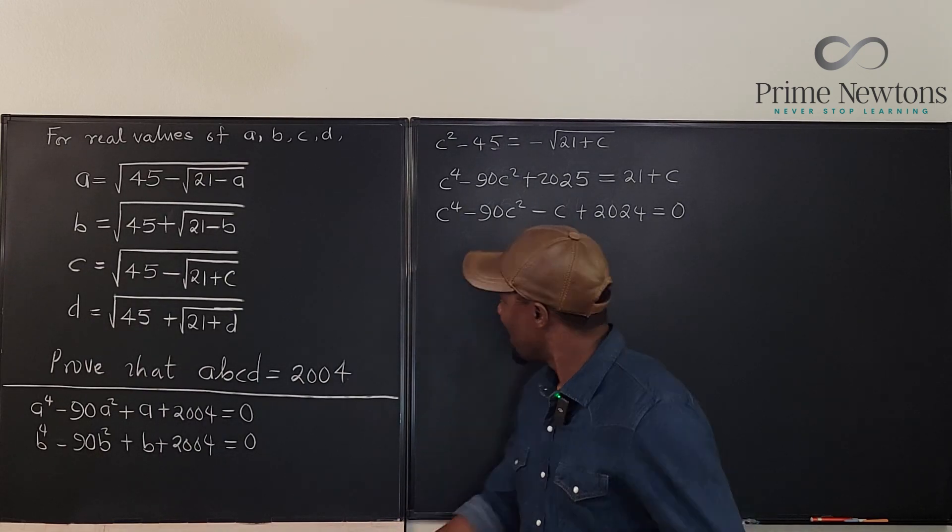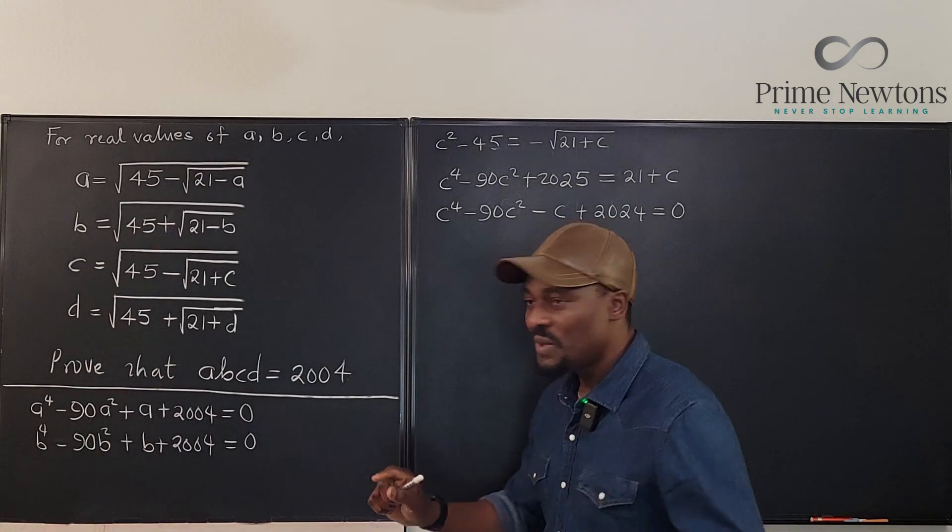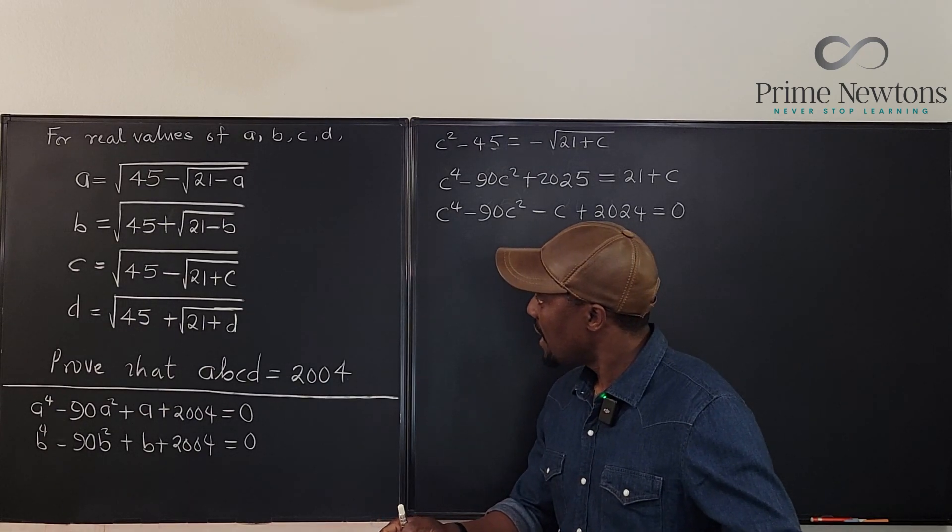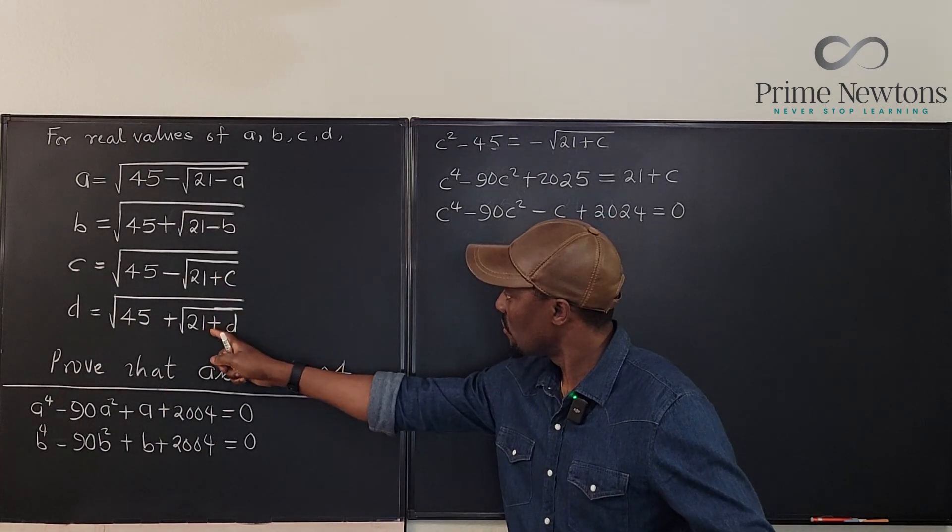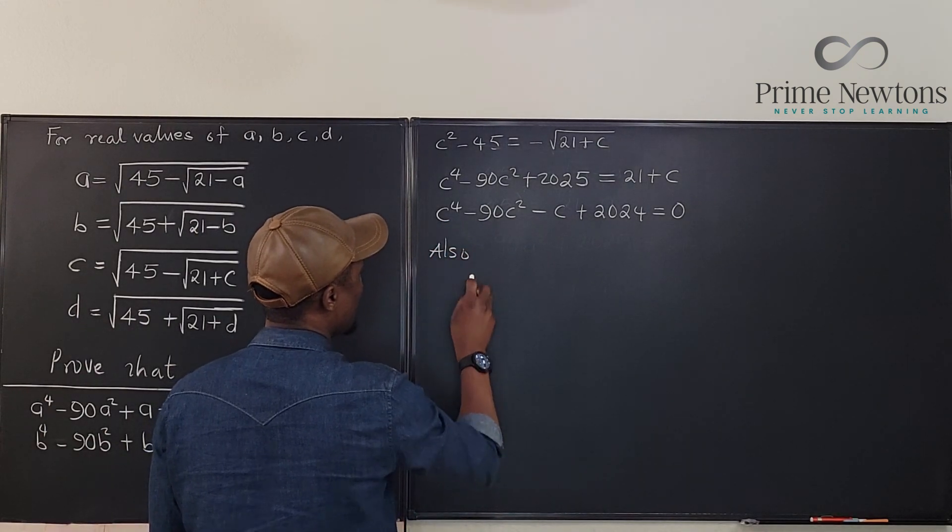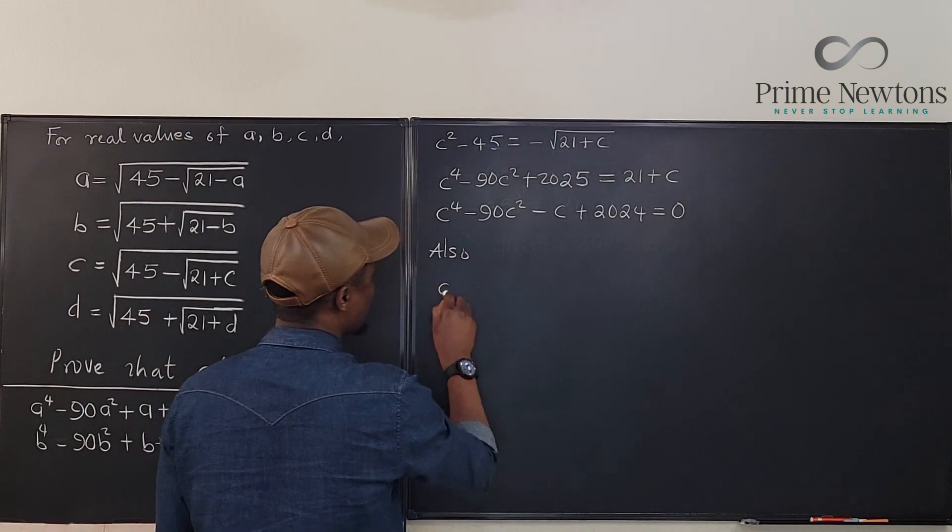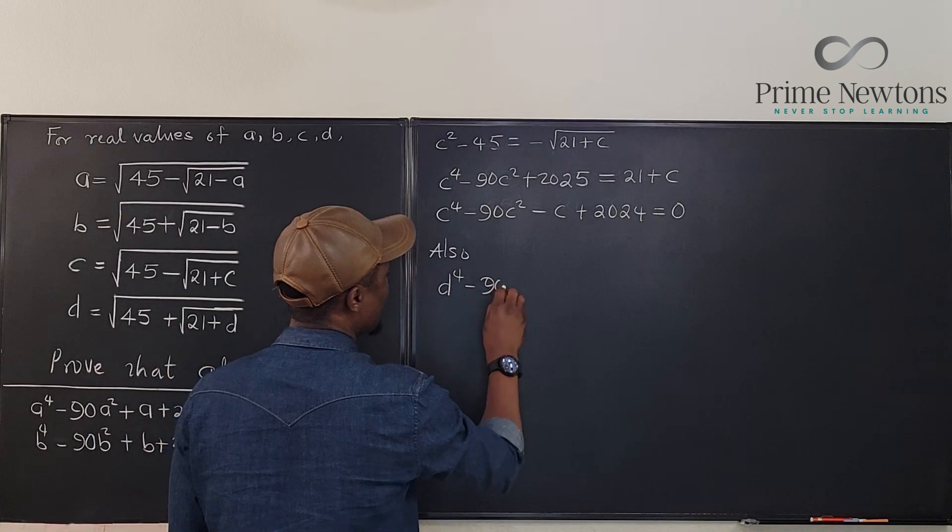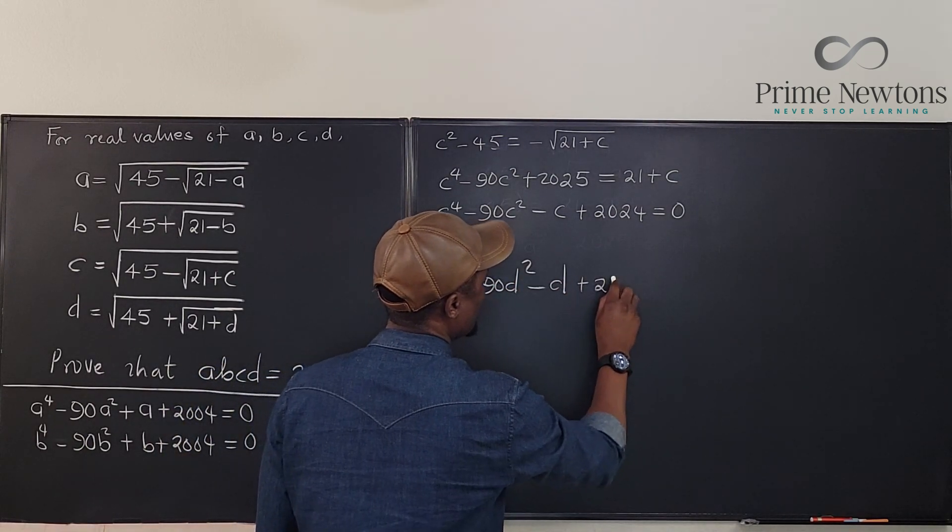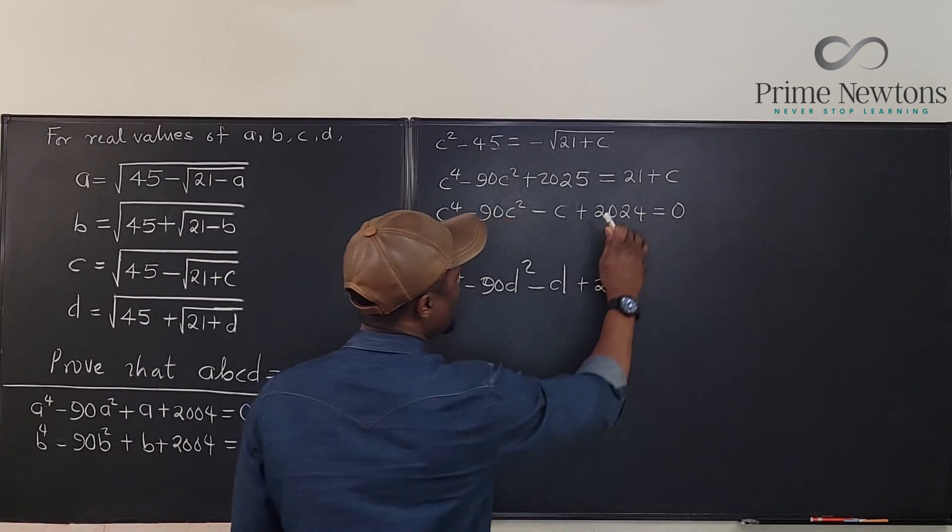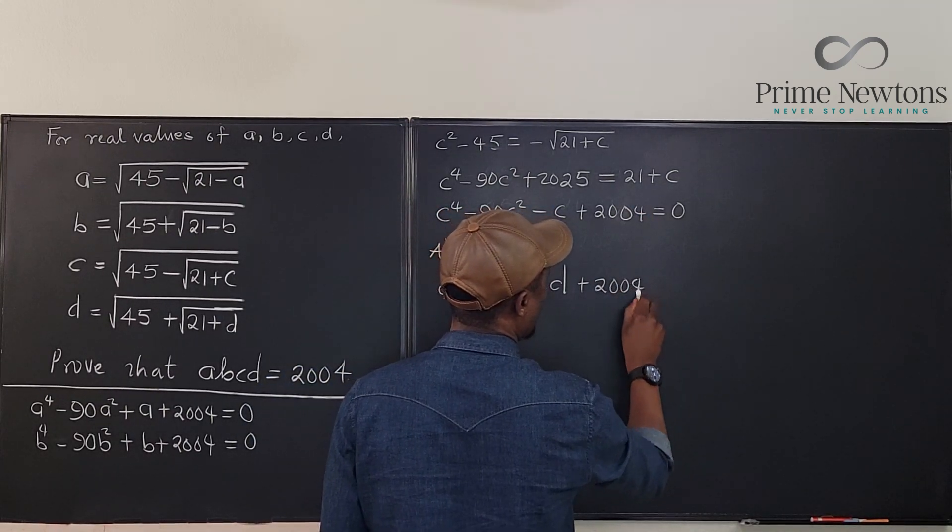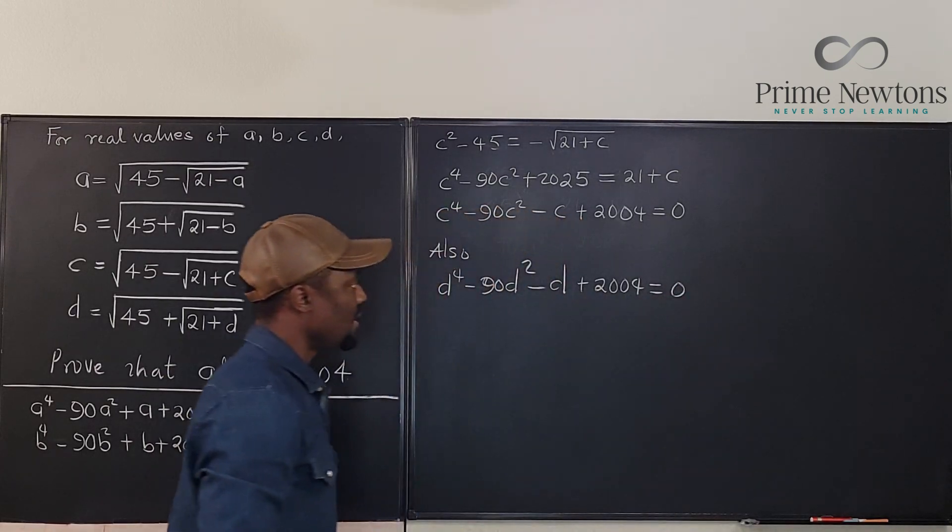So, and if we do the same thing for D, it's the same thing we're going to get. We're going to get the same thing. So also, we can say also, we have that D to the fourth minus 90 D squared minus D plus 2004. This is 2004. 2004 is equal to zero.